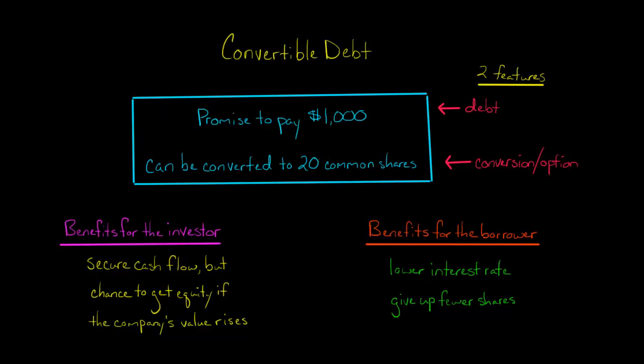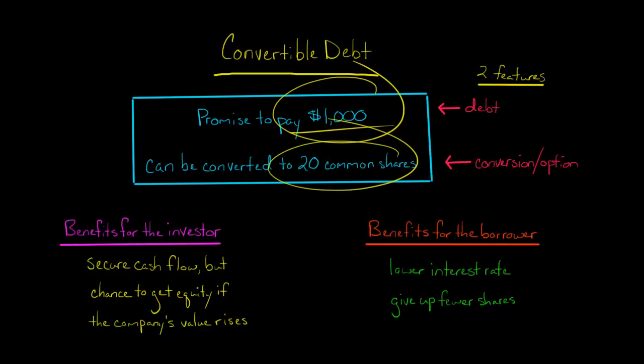In this video, I'm going to show you how to account for convertible debt. So let's say you're an investor and a company promises to pay you $1,000 five years from now, and they're going to give you interest until then. But they also say, if you want, at any point in time before they pay you back that $1,000, you can convert your debt into equity — you could get 20 common shares of stock in their company.